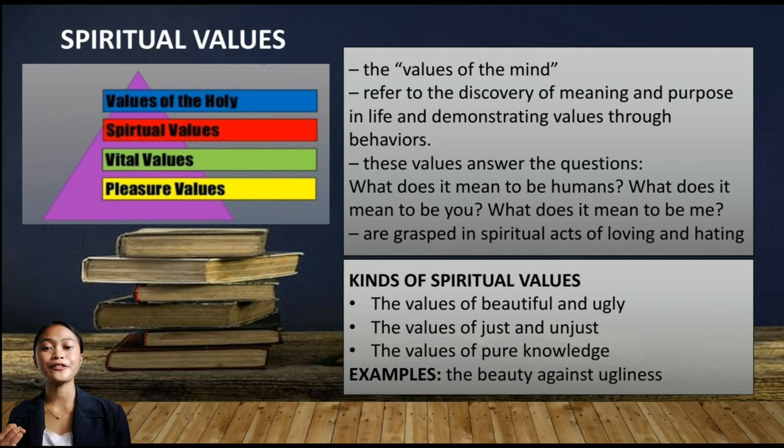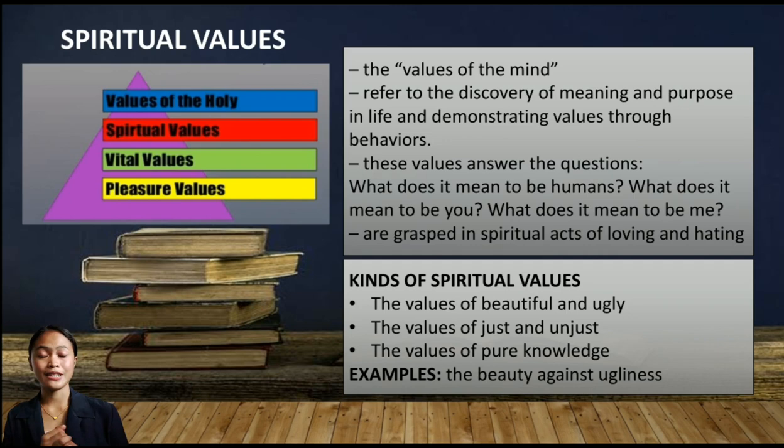Kinds of spiritual values: first, the values of beautiful and ugly; second, the values of just and unjust; third, the values of pure knowledge. An example is beauty against ugliness. For instance, during this pandemic, instead of dwelling on the negative side, we chose to be positive and have a positive mindset.